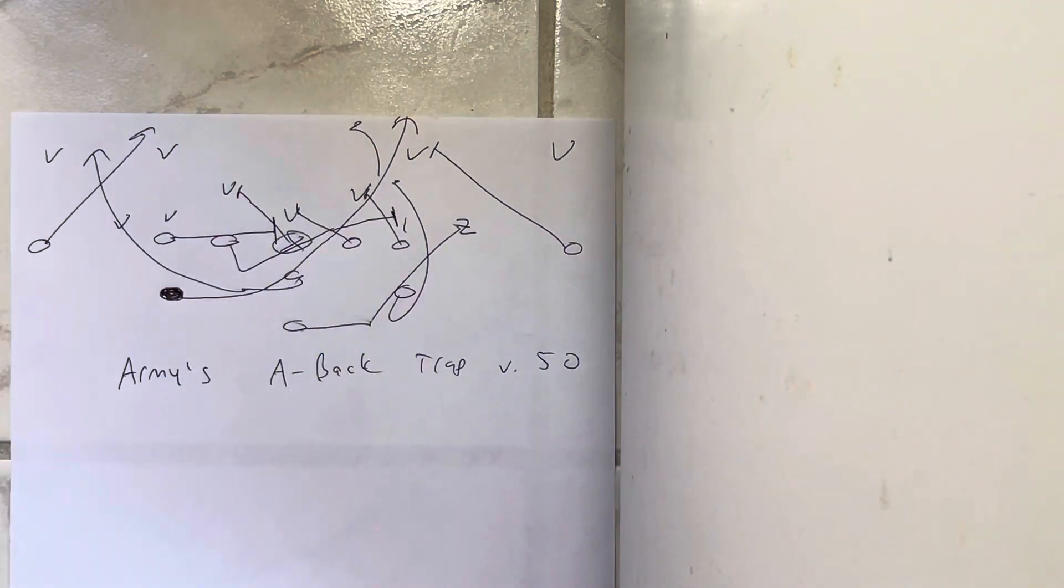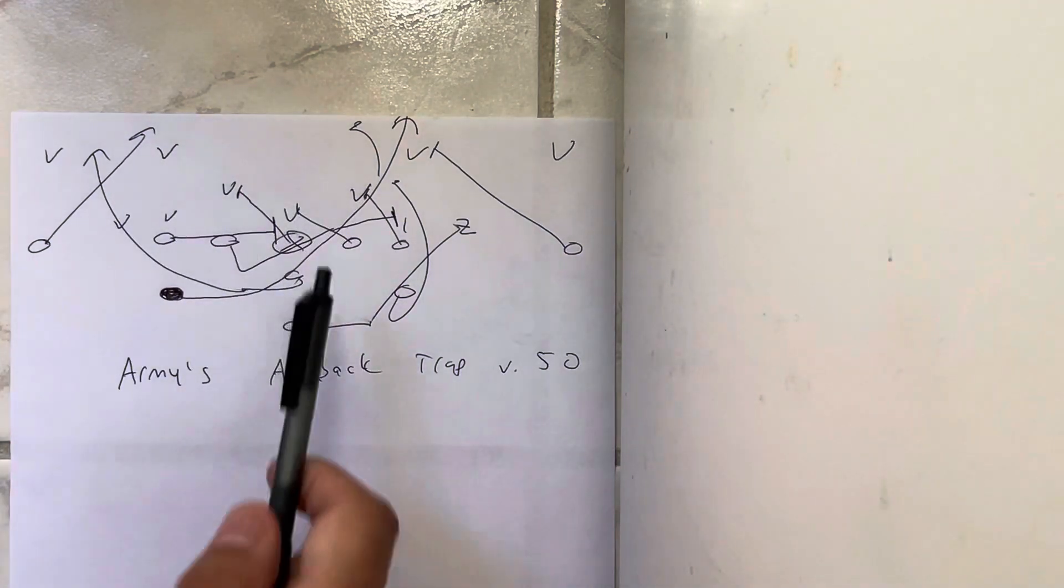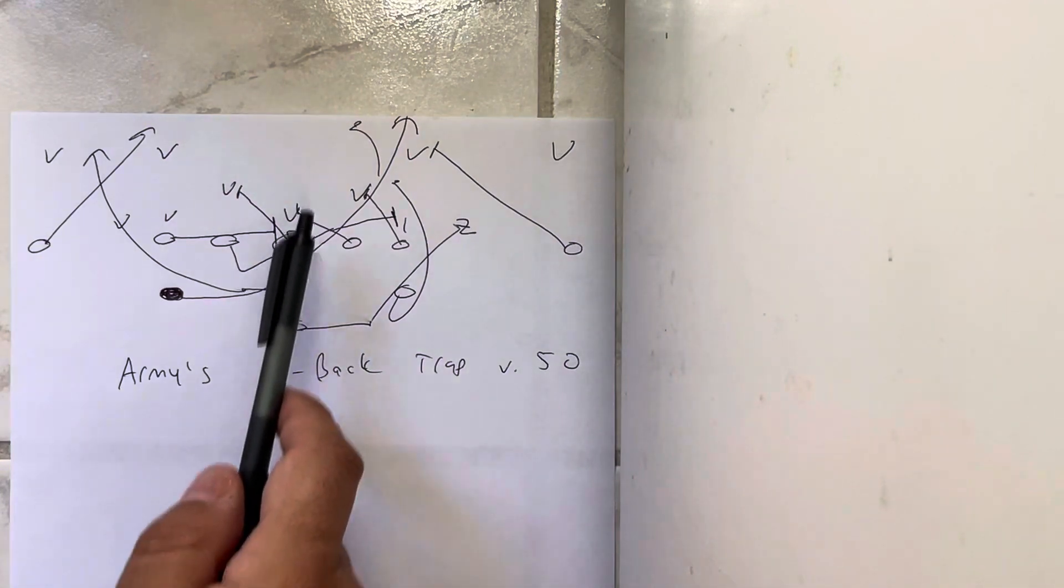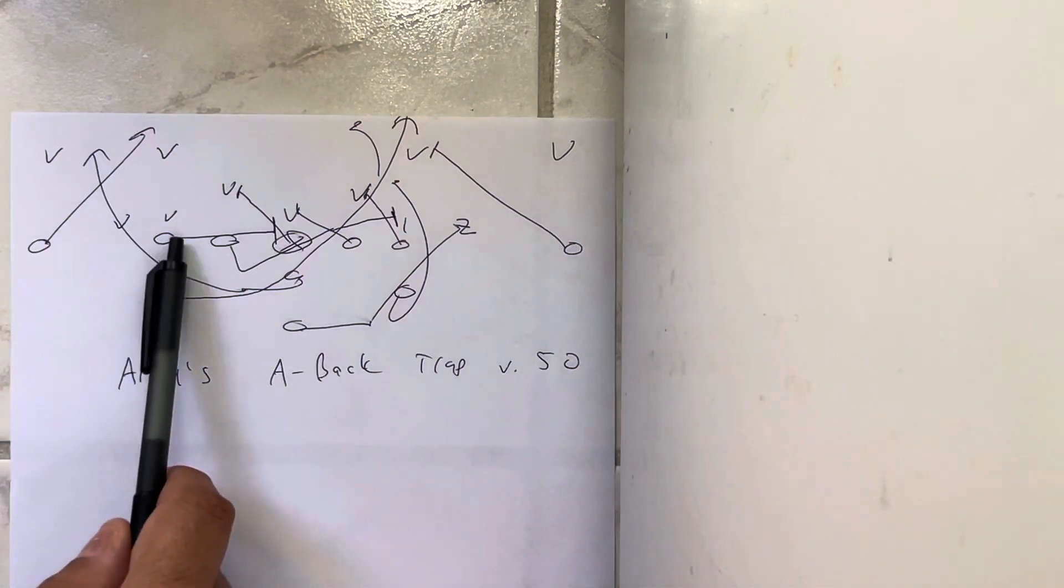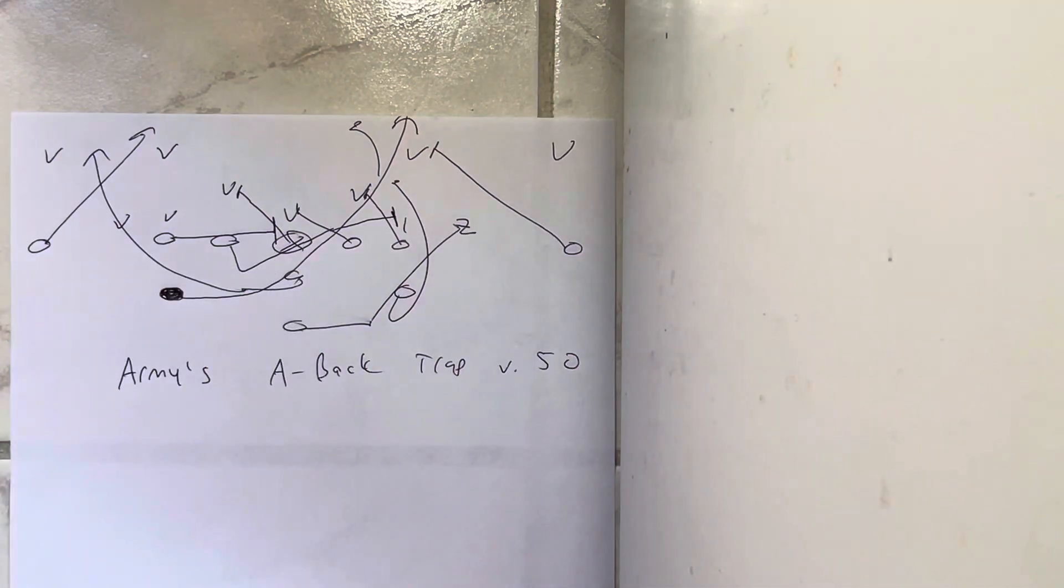The guard is going to block down, so he'll block the zero, the center. You can ace this. The problem with aceing it is if they pop the mic through, even though the tackle is scooping, he might not get there in time.